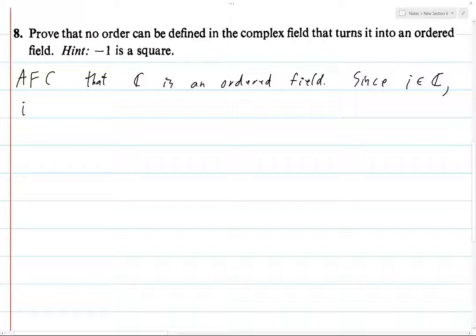That means that either i, when you compare i and 0, one of the two has to be greater than the other because they're not the same thing. So since i is in C, and in particular it's not equal to 0, it's a non-zero element of C, either i is greater than 0 or i is less than 0.